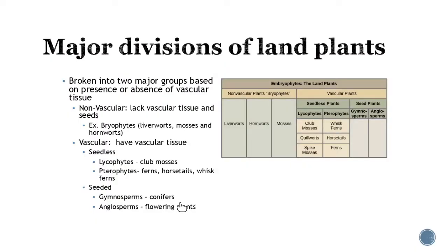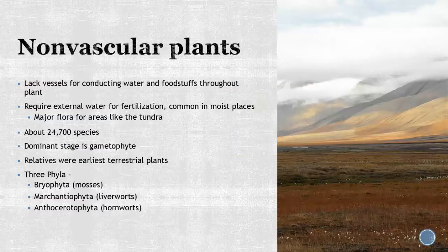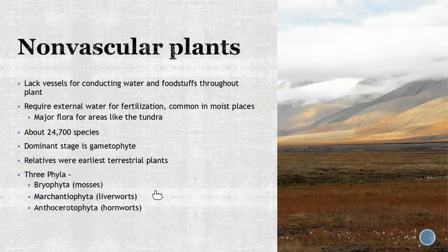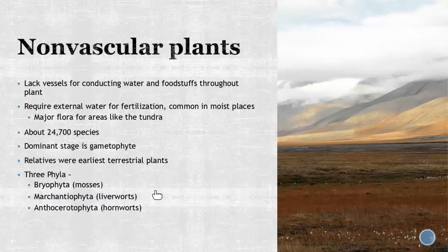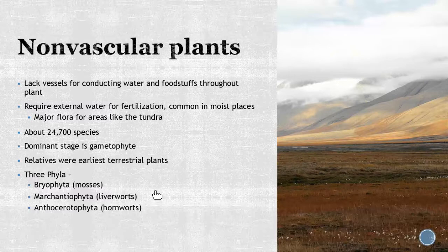So you saw this slide before, but we're going to start talking about the bryophytes first. We're just going to hit on them a little bit, and then we're going to hit a little bit on the seedless plants. First off with nonvascular plants, the key thing about them is they lack vessels for conducting water and foodstuffs throughout the plant. With these plants, you're going to see them be very simple, located in areas that are very moist, because they don't have the vascular tissue to move water and nutrients throughout the whole plant.